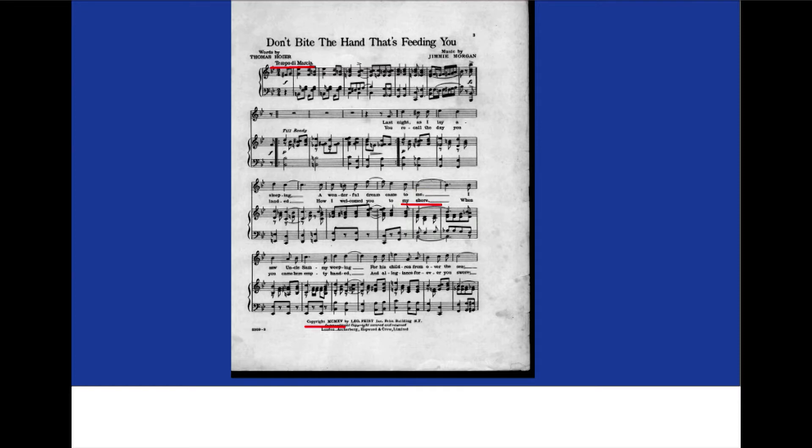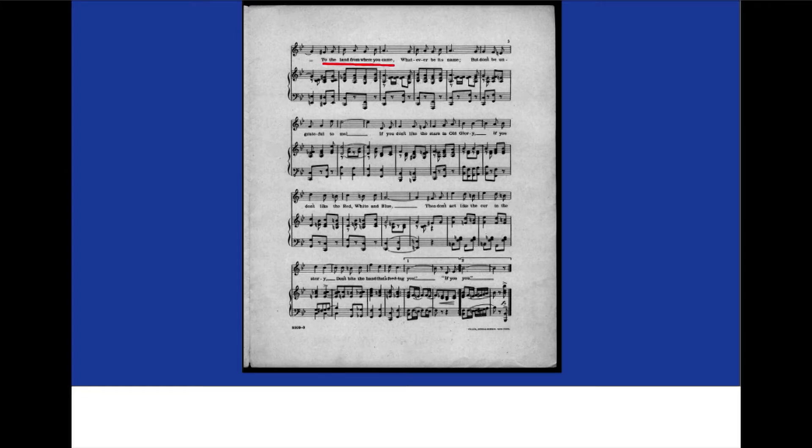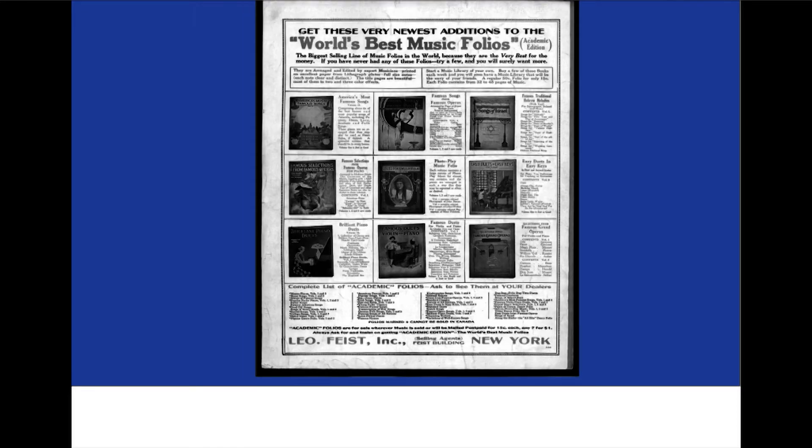I see some references to My Shore and Uncle Sammy. On the second page, I noticed it says 'then go back to your home or the sea' and 'how they abuse and revile him'—so somebody is doing something that others disapprove of. It references 'the land from where you came' and makes reference to Old Glory, the red white and blue. On the last page is a collection of different music folios by the same publisher listed on the front page, so this looks like a major publisher of music during this time.